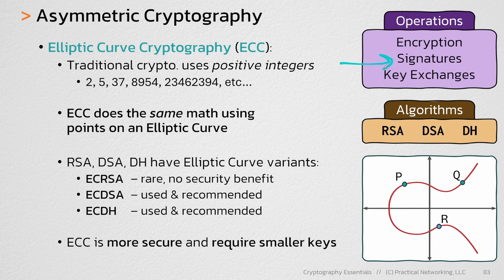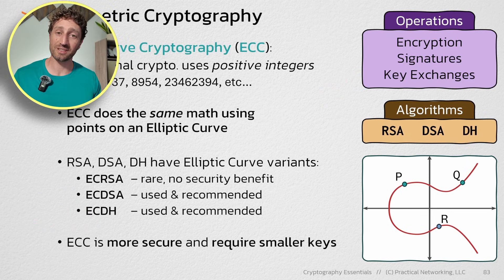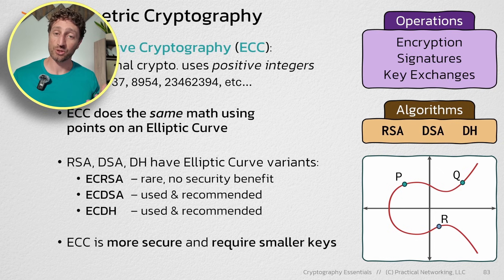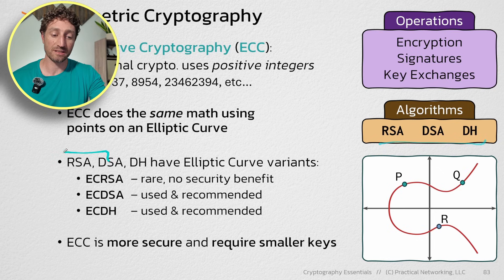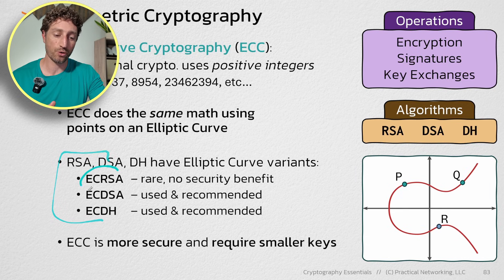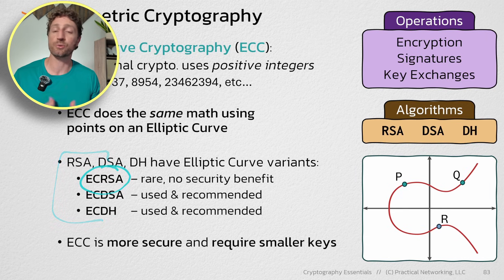So anytime you're needing a signature, instead of doing DSA, you should do ECDSA. Or anytime you need a key exchange, instead of doing Diffie-Hellman, you should do elliptic curve Diffie-Hellman. In a way, you can see that we've been talking about elliptic curves this entire time. So everything you've learned about these algorithms also applies to the elliptic curve variants, with one exception of course — ECRSA, which is pretty much never used in the real world.